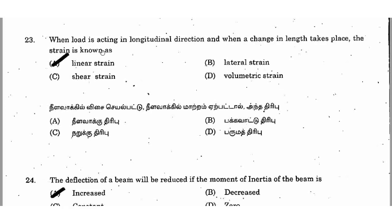When load is acting in the longitudinal direction and a change in length takes place, the strain is known as linear strain or longitudinal strain. The right answer is option A. Lateral strain occurs in the direction transverse to the load. Volumetric strain is the change in volume divided by original volume. Shear strain is due to shear stress. The right answer is option A, linear strain.